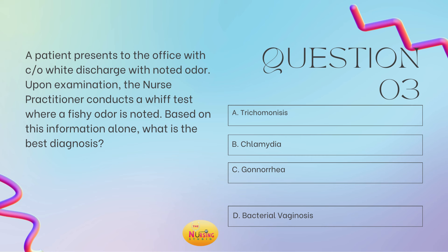Question number three. A patient presents to the office with complaints of white discharge with noted odor. Upon examination, the nurse practitioner conducts a whiff test where a fishy odor is noted. Based on this information alone, what is the best diagnosis? Is it A, trichomonas; B, chlamydia; C, gonorrhea; or D, bacterial vaginosis? Take a moment and tell me what you got in the comments.